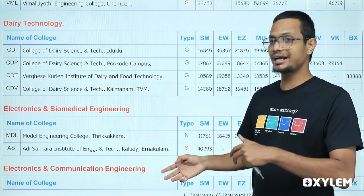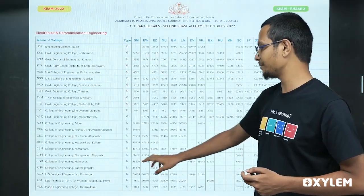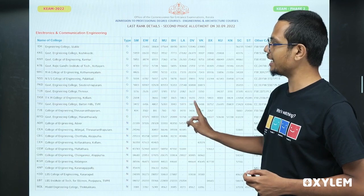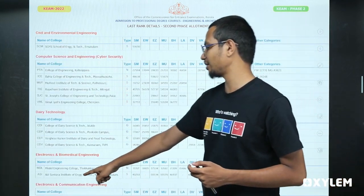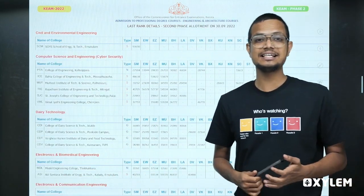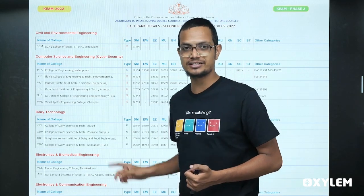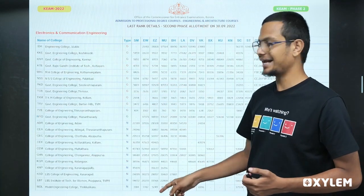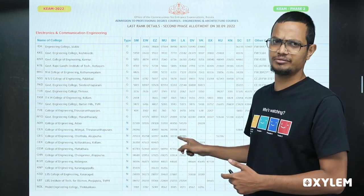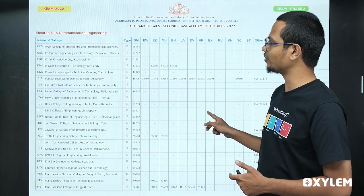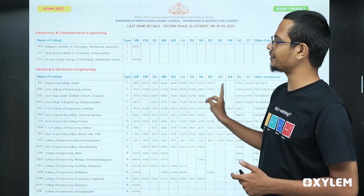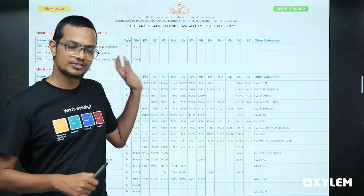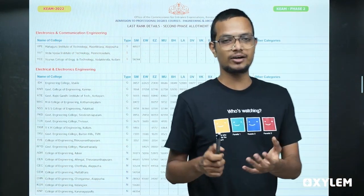If you are interested in both engineering and the medical field, I would like to introduce this model. The CSE course, ECE — electronics and communication engineering — is available for government colleges and all colleges. This is an ECE course. CSE is the primary option. Other colleges also have the basic engineering courses.